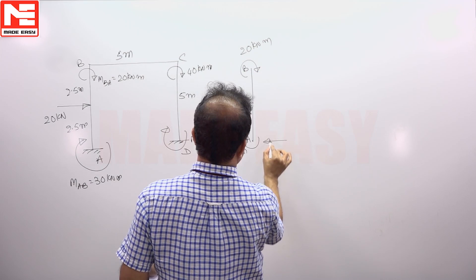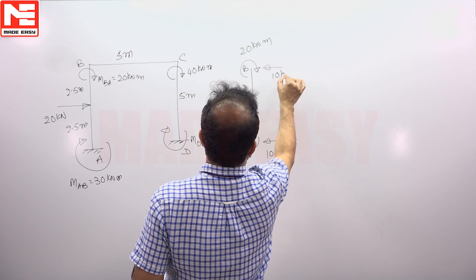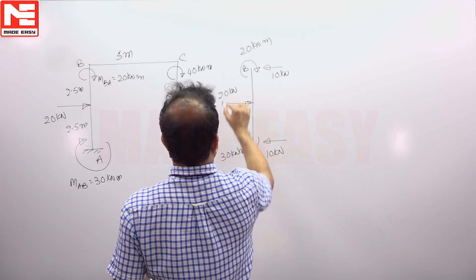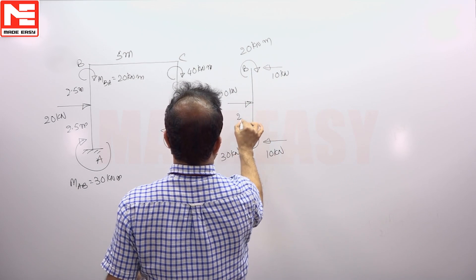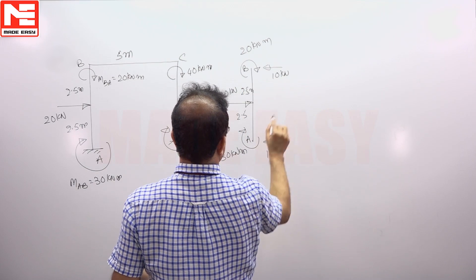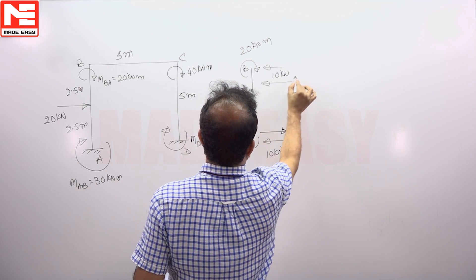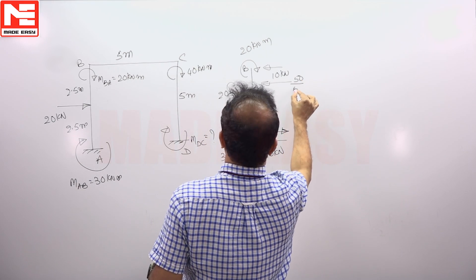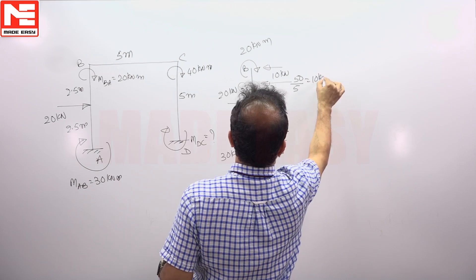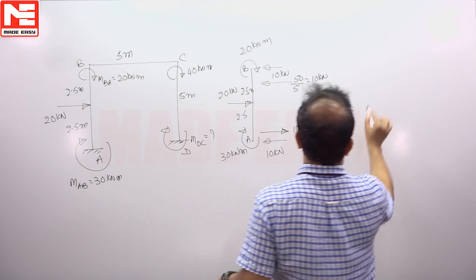Because of 20 here, the reaction is 10 kilonewton, 10 kilonewton. 50, clockwise 50, so anti-clockwise. 50 by 5, 50, so 10 kilonewton.